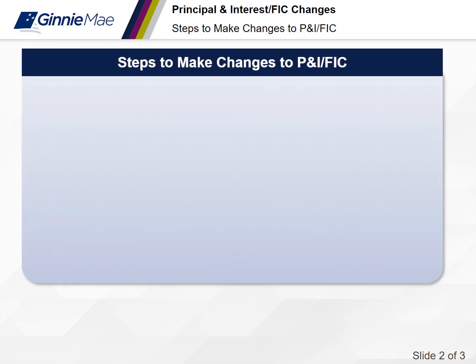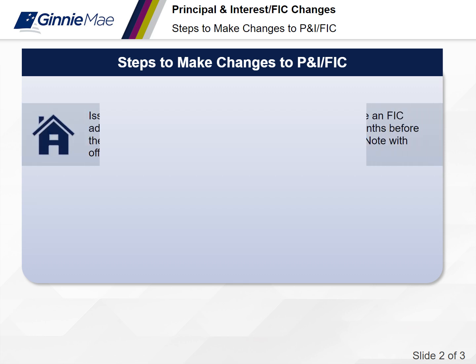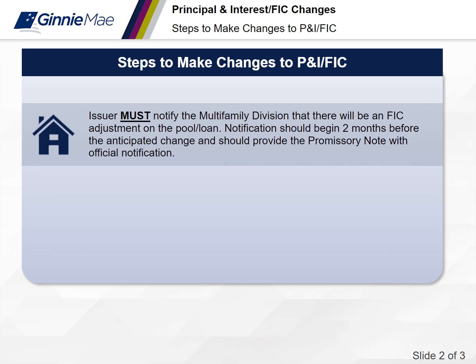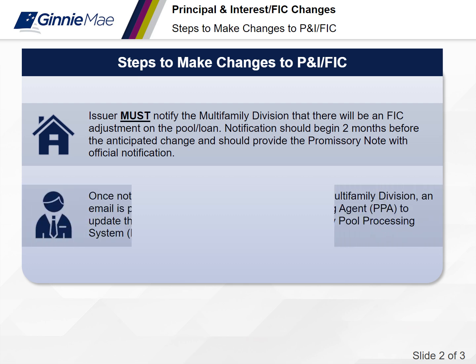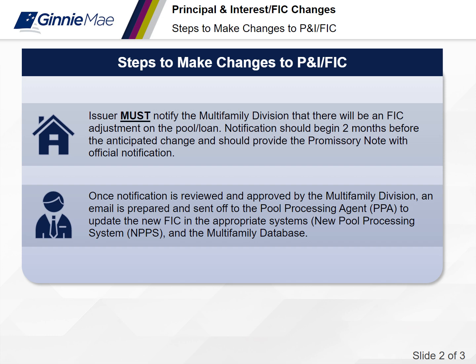The steps to make changes to the P&I or the FIC: first, the issuer must notify the multifamily division that there will be a FIC adjustment on the pool or loan. The notification should begin at least two months before the anticipated changes and should provide the promissory notes with the official notifications. Once that notification is reviewed and approved by the multifamily division, an email is sent to the pool processing agent — the bank — to update the new FIC in the appropriate systems, known as NPPS (New Pool Processing System), as well as the multifamily database.